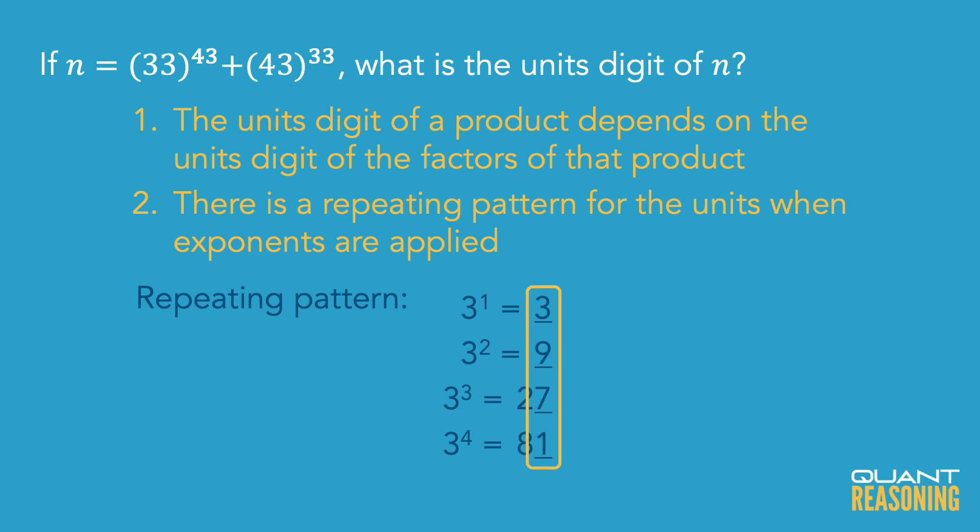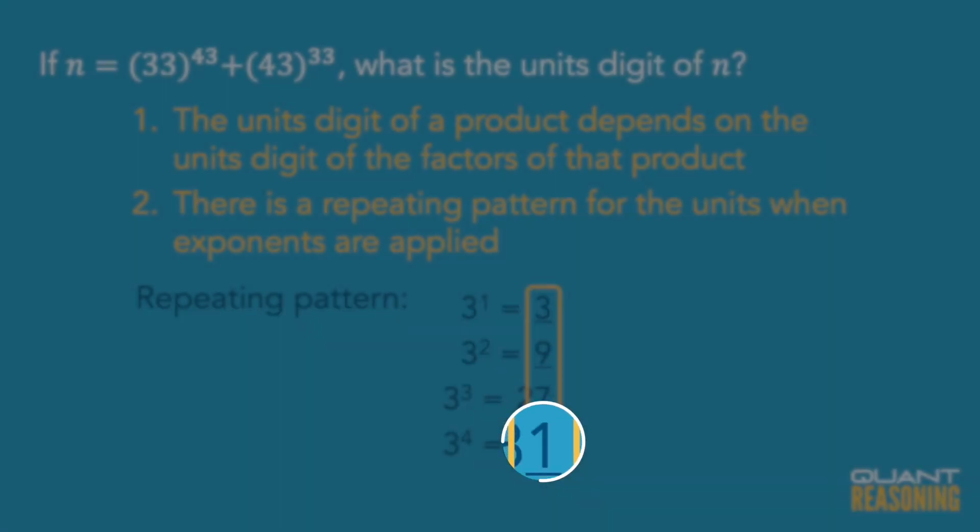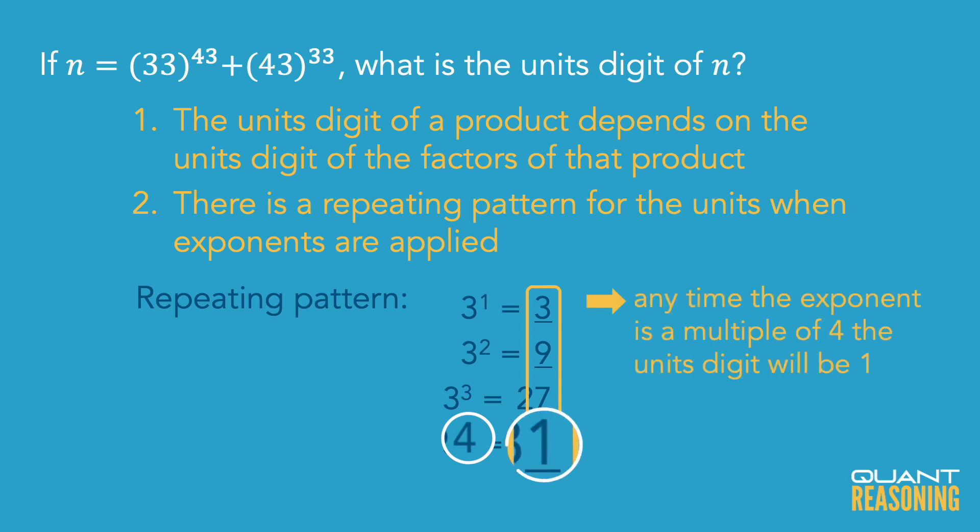So the units digit is going to be repeating like this: 3, 9, 7, 1, repeating. The pattern length is 4, so we can say that anytime the exponent is a multiple of 4, the units digit will be 1.